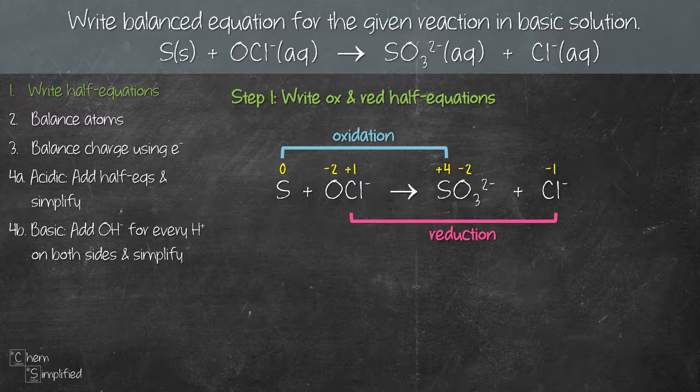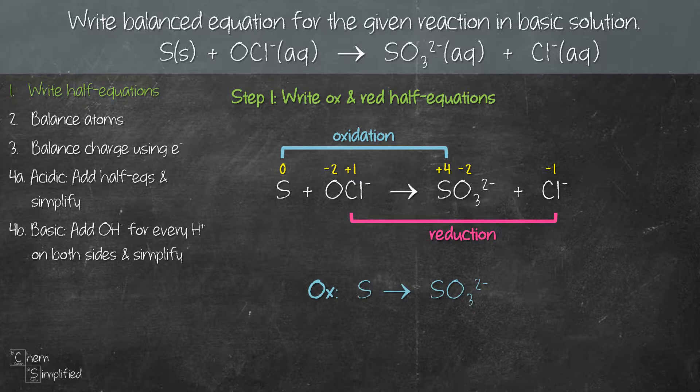Now we can write out our half equations. For oxidation, it's S going to SO₃²⁻, and for reduction, it's OCl⁻ going to Cl⁻.